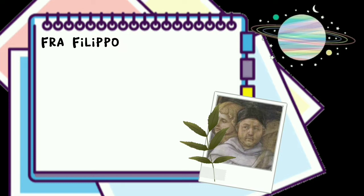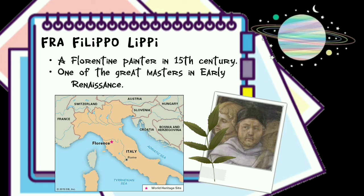Fra Filippo Lippi was a Florentine painter in the second half of the 15th century. Perhaps the most important painter, he is also one of the great masters of the early Renaissance period. He is a type of artist with tremendous skills and versatility. He managed to strike a fine balance between traditions of devotional arts and current humanist influences.